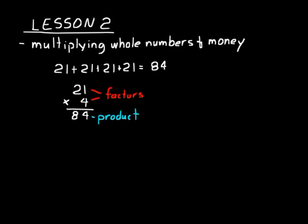In multiplication, the numbers that you multiply together are called factors, and the result of the multiplication is called the product. Remember in lesson one we learned that the result of addition is called the sum, and the result of subtraction is called the difference. In multiplication, the result is called the product.